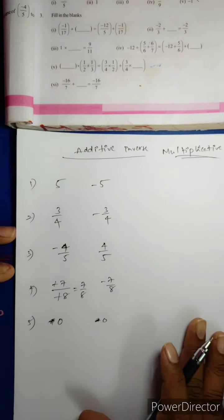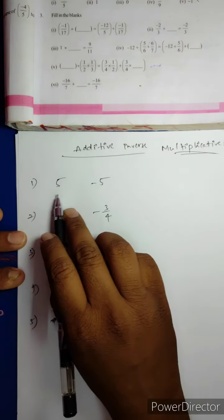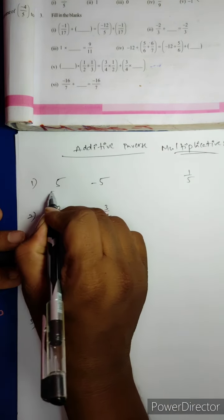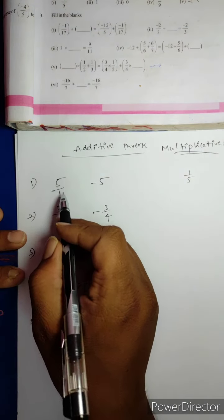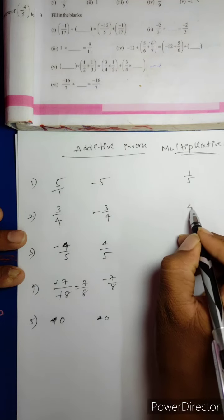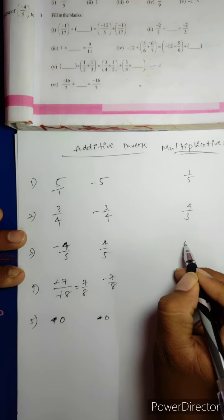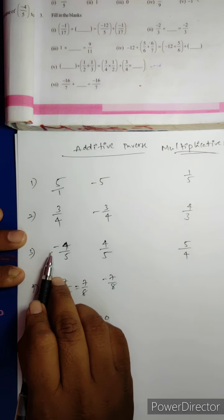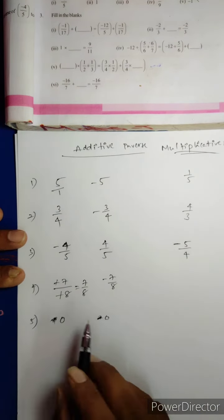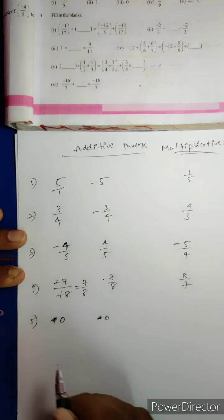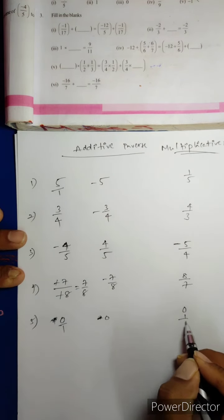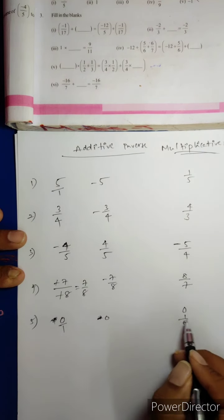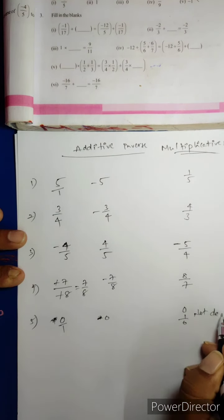Now multiplicative inverse. What is the multiplicative inverse of 5? It is 1/5, because all natural and whole numbers have 1 in the denominator, so 5 = 5/1, and its reciprocal is 1/5. The reciprocal of 3/4 is 4/3. The reciprocal of −4/5 is −5/4 — the minus sign is retained. The reciprocal of 7/8 is 8/7. The reciprocal of 0 is not defined because 1/0 is not defined.